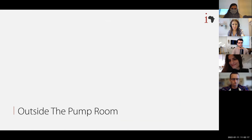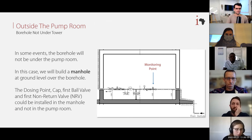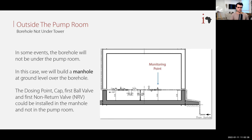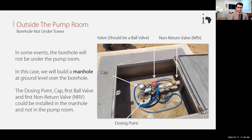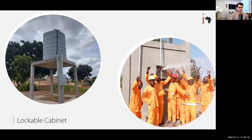Now let's talk about outside the pump room. In some cases the borehole will not be under the pump room, and we'll build a manhole at ground level over the borehole to protect it. If the manhole is big enough, we can choose to put the dosing point cap, first ball valve, and non-return valve inside the manhole, giving maximum control over the borehole even though it's outside the pump room.